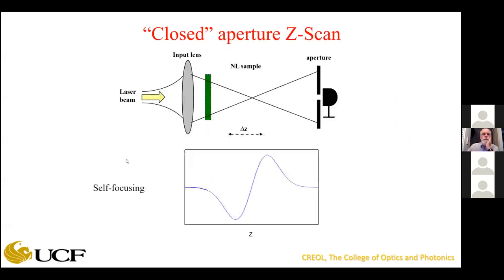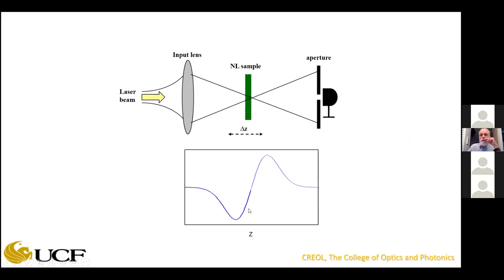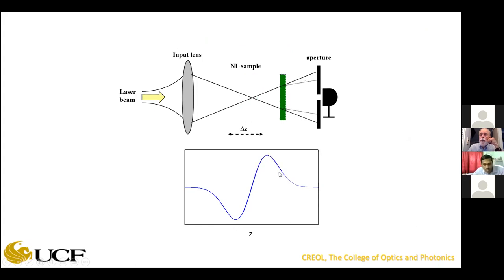Let's run through the z-scan one more time. I'll take a sample with self-focusing, so n₂ > 0. I look in the far field with an aperture, with a thin sample, and move it through the focus while measuring transmitted energy. Self-focusing makes the focus occur a little earlier, so the beam diverges more in the far field and less energy is transmitted. But on the other side of focus, it tends to collimate the beam through the aperture and you get more energy transmitted — that's the closed-aperture z-scan in a nutshell.